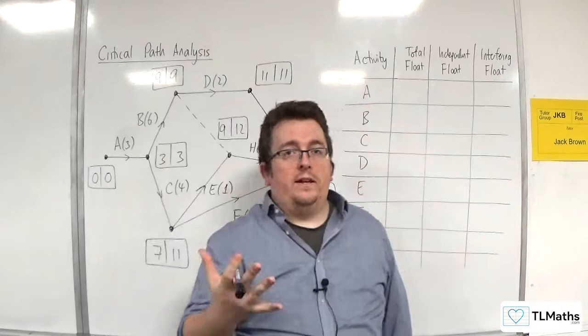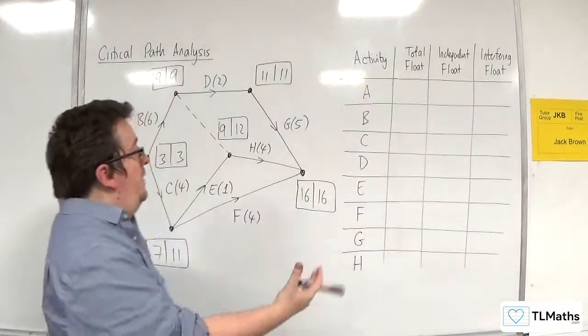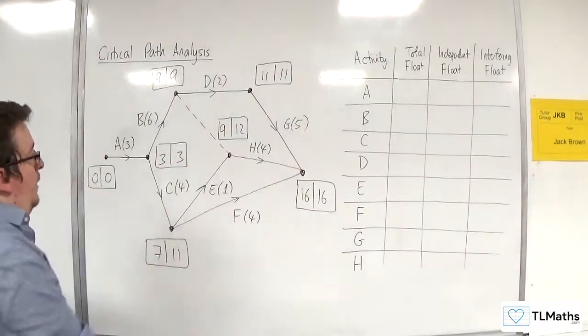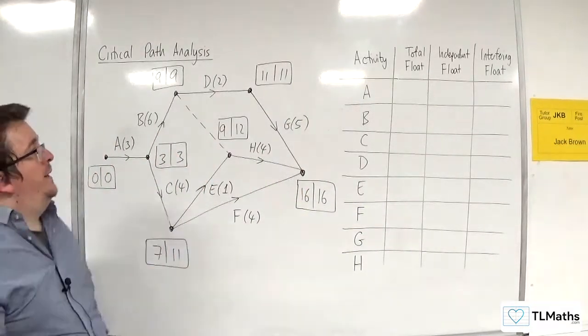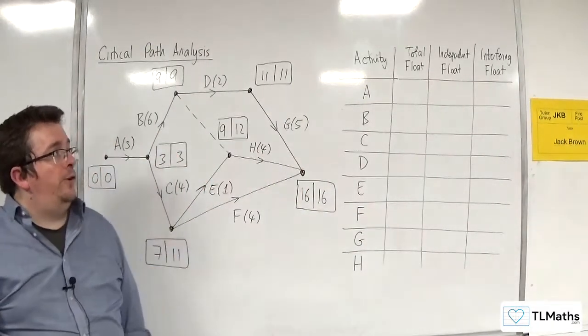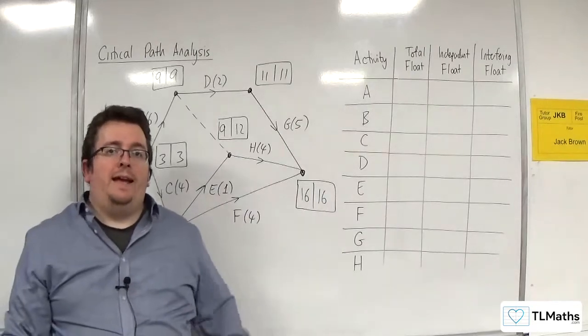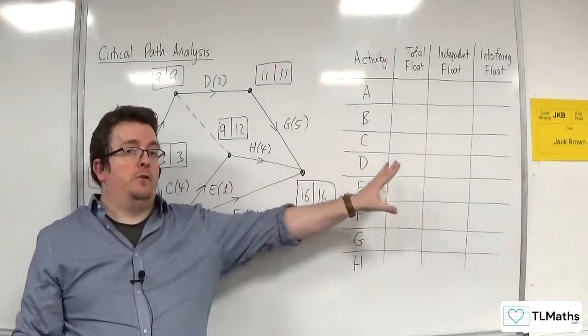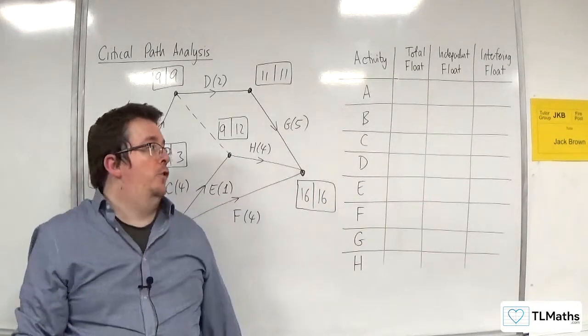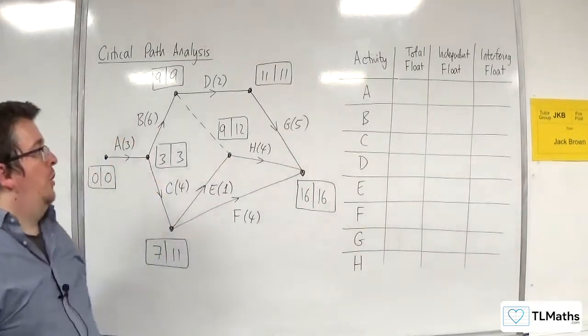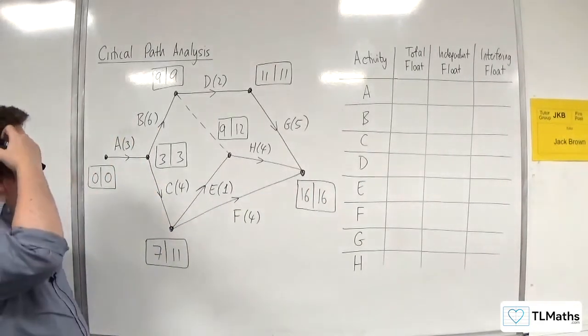In this video, we're going to consider this activity network, and we're going to calculate the total float, independent float, and interfering float for each of the activities.